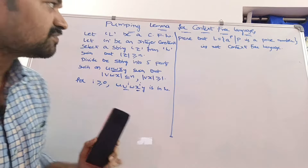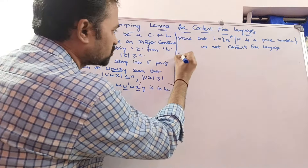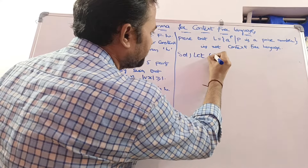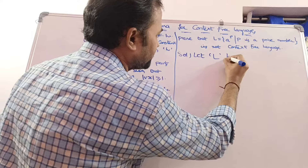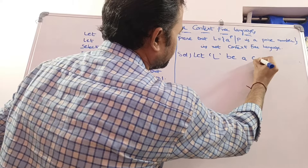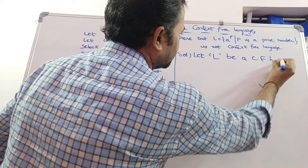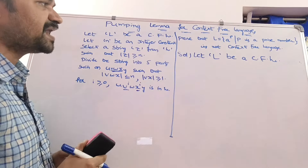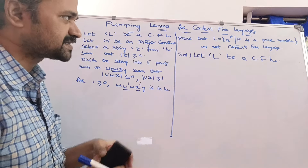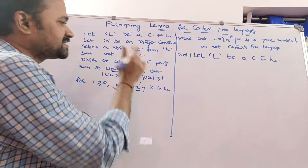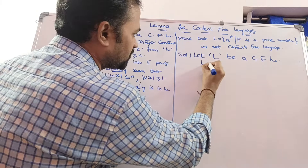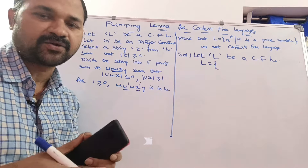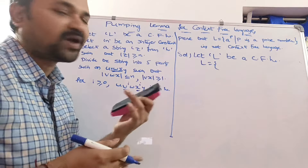Now let us solve the problem. Initially we assume this language is a context-free language. Before choosing n, let us write the language: L = {a^p | p is a prime number}.